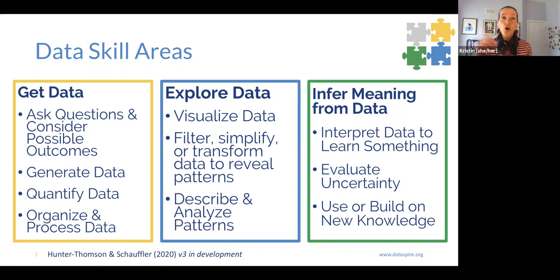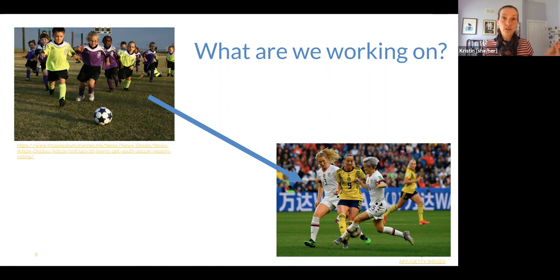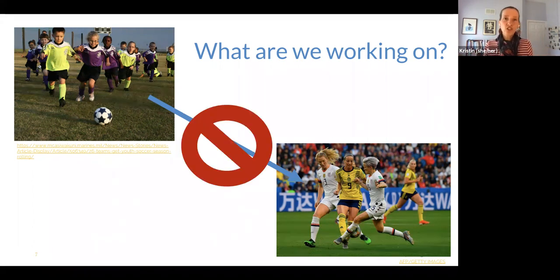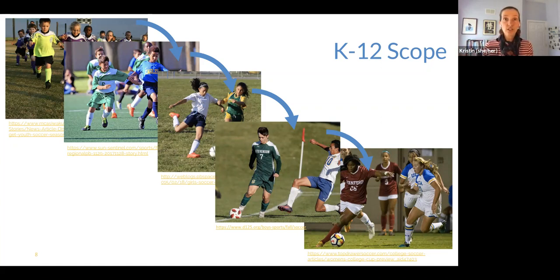We aren't hitting all of these data skill areas every time we work with data, but we're hitting at least something across each of these three realms. And it's important to remember — thinking about soccer as an analogy — the amoeba ball that our little ones play when they're first learning soccer looks really different than our U.S. professional team playing at the World Cup. They're both playing soccer, but at very different levels of skill mastery. We're not trying to go from amoeba ball to the World Cup. Instead, we're strategically and consciously building this progression through time and practice, stepping up this K-12 sequence to prepare our students for college, the workforce, or society at large, given how much data we have.